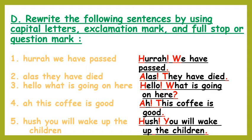Fourth: Ah, this coffee is good. Ah is an interjection, so A in capital followed by an exclamation mark, then T of 'this' in capital: Ah! This coffee is good, full stop. Fifth: Hush, you will wake up the children. Hush is an interjection, so H in capital followed by an exclamation mark, then Y of 'you' in capital: Hush! You will wake up the children, full stop.